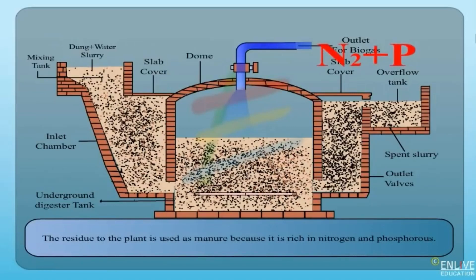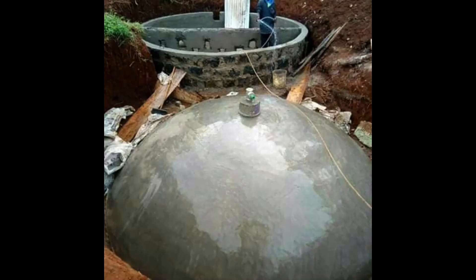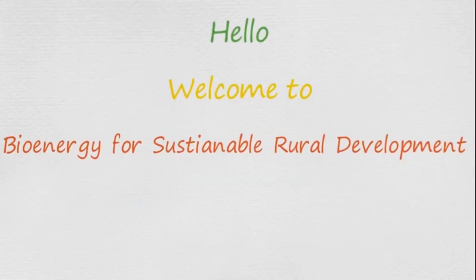Monitoring and maintenance: Check the gas holder regularly to ensure proper gas production and pressure. Monitor the inlet and outlet pipes for any blockages. Inspect the digester for leaks and cracks. Repair them promptly to maintain gas production efficiency.